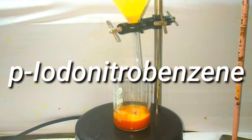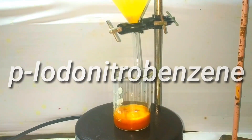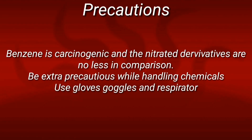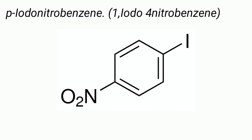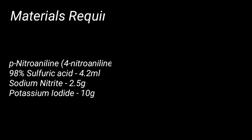Hello friends. In this video, we will synthesize paraiodonitrobenzene. Paraiodonitrobenzene is just a substituted benzene with a nitro and an iodine group. It is an important raw material and intermediate used in organic synthesis.